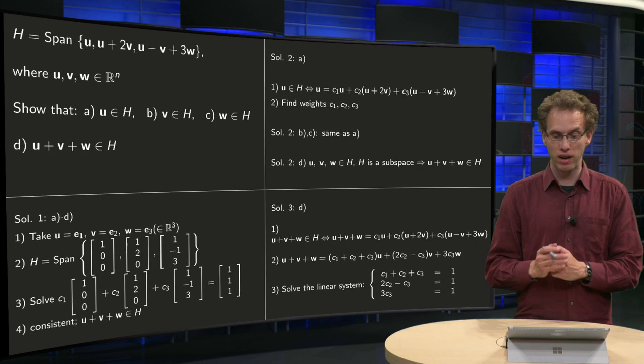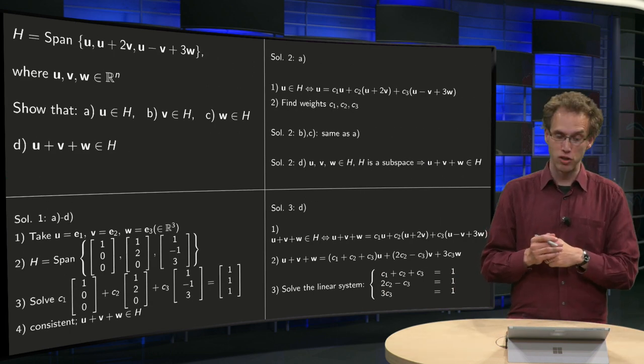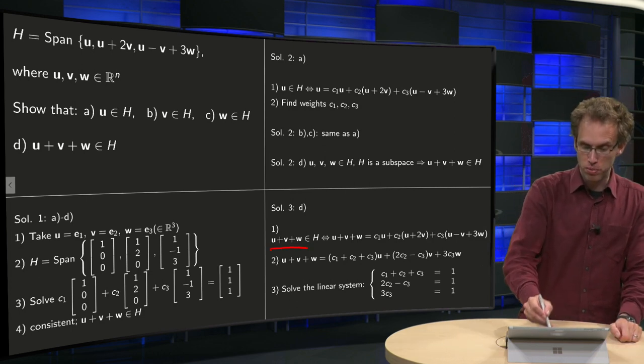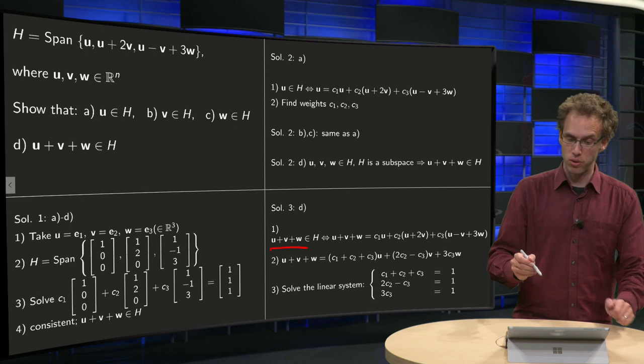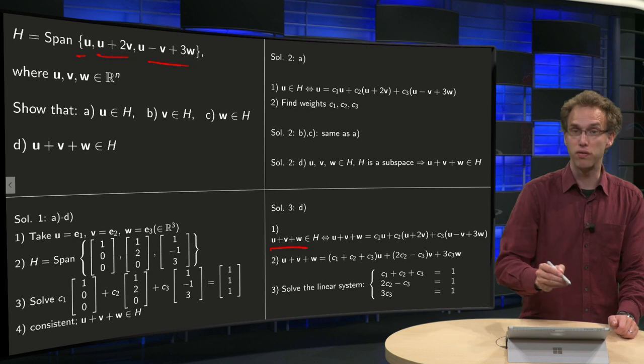Another method for exercise D if you haven't done A, B and C first works as follows. Well, you want to show that U plus V plus W is in H, so you have to show that U plus V plus W is a linear combination of these three vectors over here.